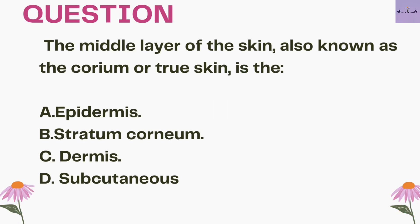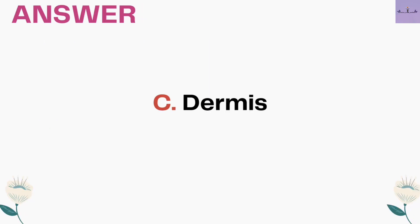Next question: the middle layer of the skin, also known as the corium or true skin, is — A. Epidermis, B. Stratum corneum, C. Dermis, and D. Subcutaneous. Epidermis is the outermost layer. Stratum corneum is a layer of the epidermis — the epidermis has five layers. Subcutaneous is the innermost layer, also known as hypodermis. The middle layer of the skin is the Dermis, so the answer is option C.